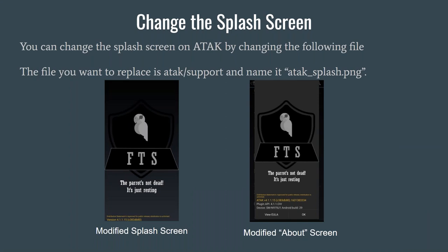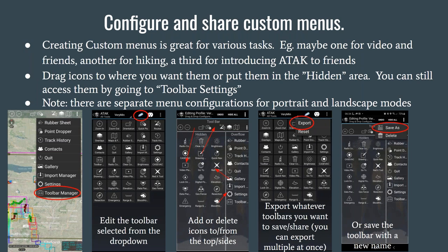One thing you can do to customize ATAC is adjust or create your own splash screen and about screen. Just place your PNG file in the ATAC support folder, make sure it's named properly, and you get your own customized version of ATAC. Most people also don't realize you can customize the toolbar — the steps define how to get in there, remove, replace, edit, and rearrange items. You can also export and save those settings so you don't have to redo it every time you reinstall ATAC or add it to a new phone.